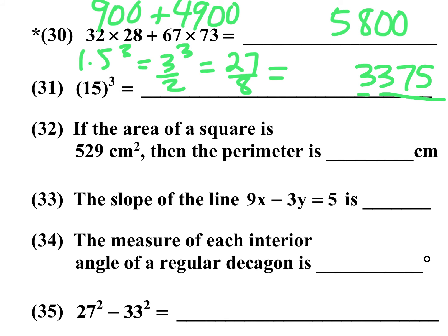Number 32, if the area of a square is 529, there's a perfect square. You should recognize that. That's 23 squared. So each side is 23. Then what is the perimeter? There's four sides, four equal sides in a square, so 4 times 23. That means that the perimeter is 92 centimeters.